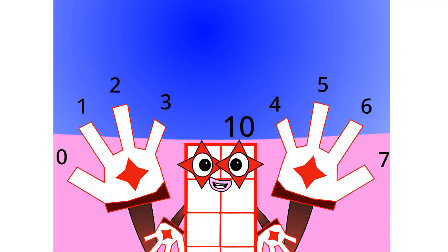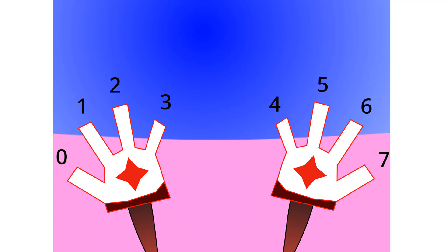Oh wow. Looks like I am no longer Octoblock, but I am still called Eight. So yeah. This base has eight digits: zero, one, two, three, four, five, six, and seven.